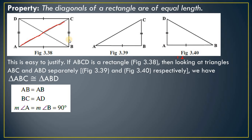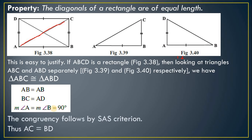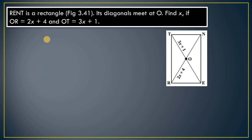The angles at A and B are both 90 degrees since it is a rectangle, so those angles are equal. Side AB is common to both triangles. By the Side-Angle-Side congruence property, triangles ABC and ABD are congruent. Therefore AC equals BD — the diagonals are of the same length. This proves that the diagonals of a rectangle are equal in length.